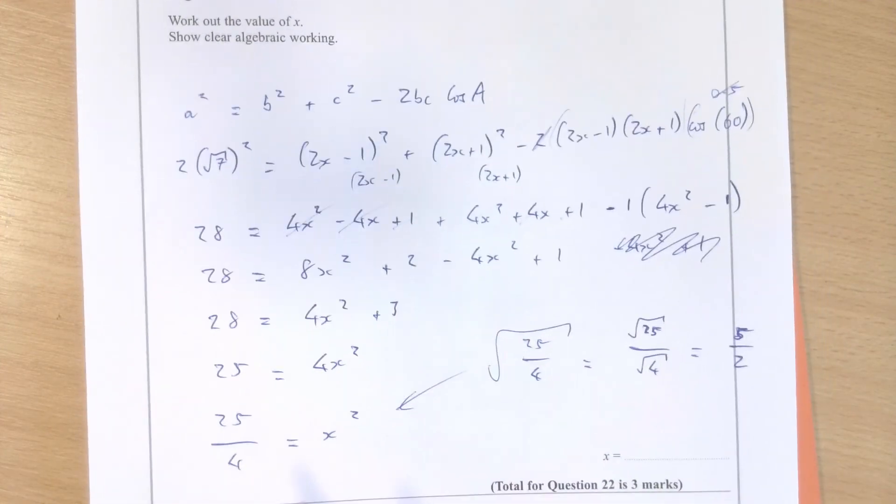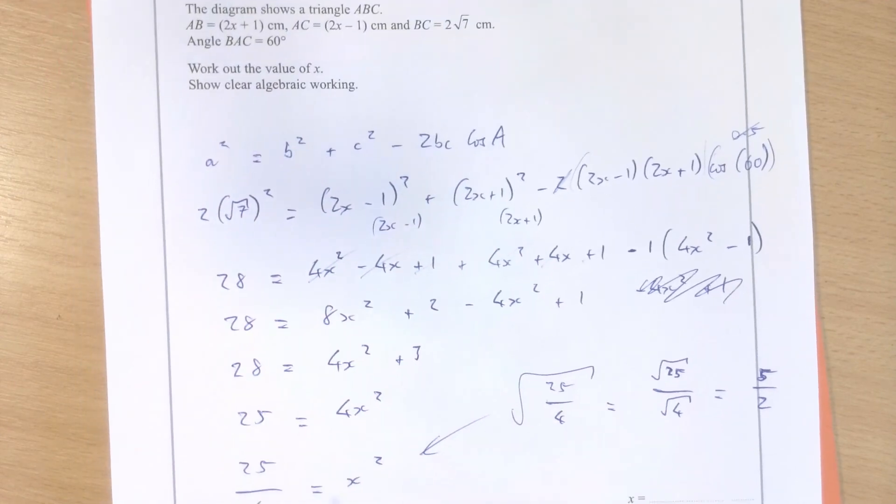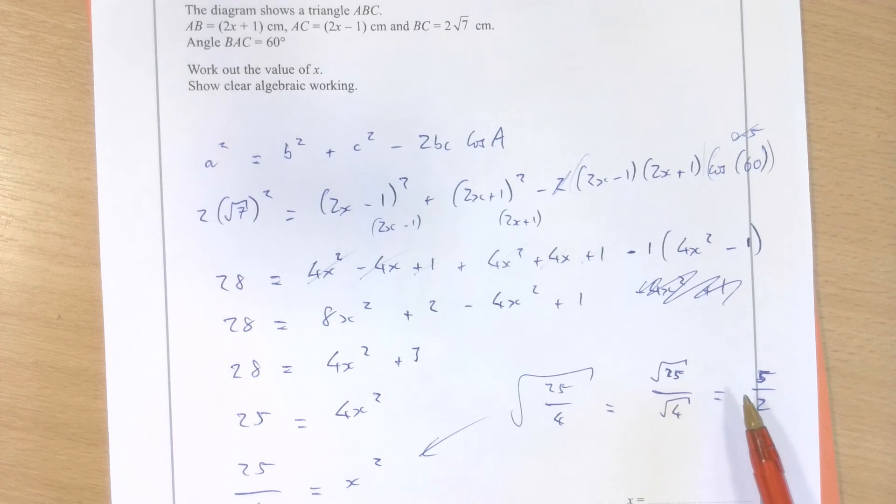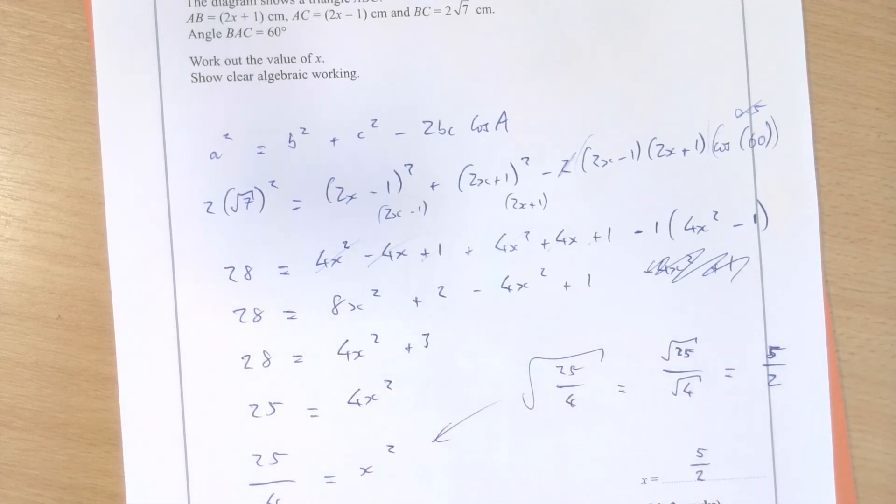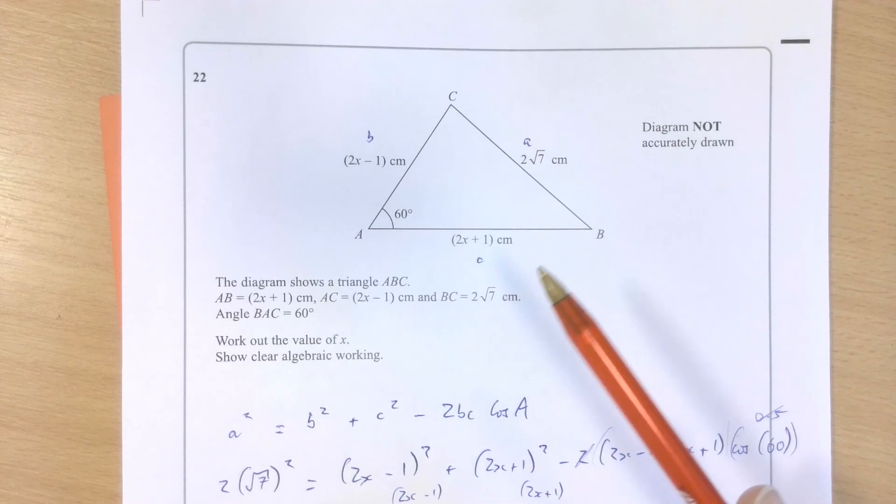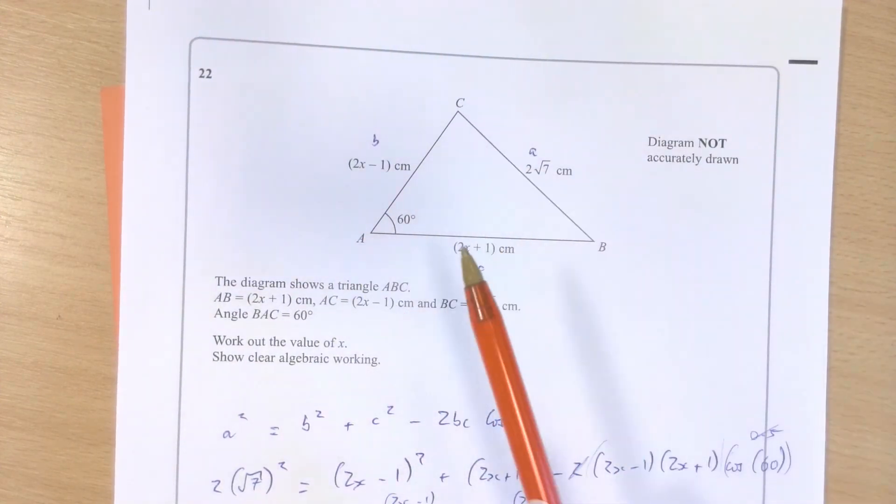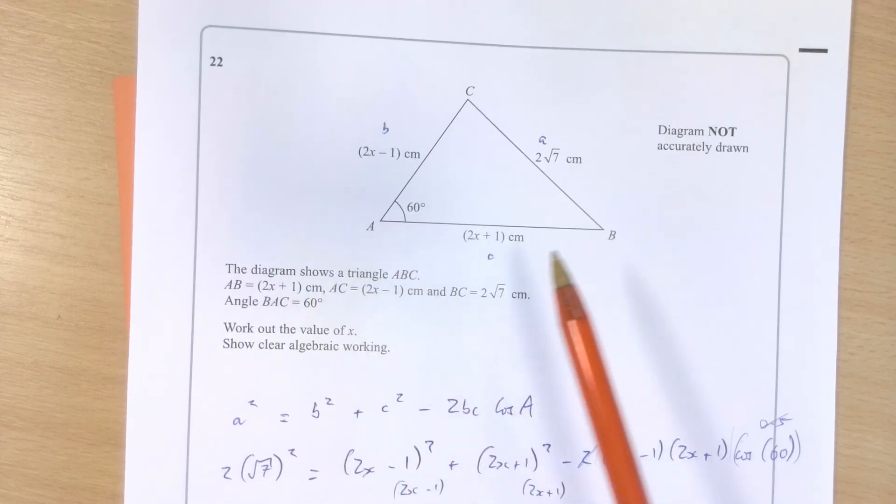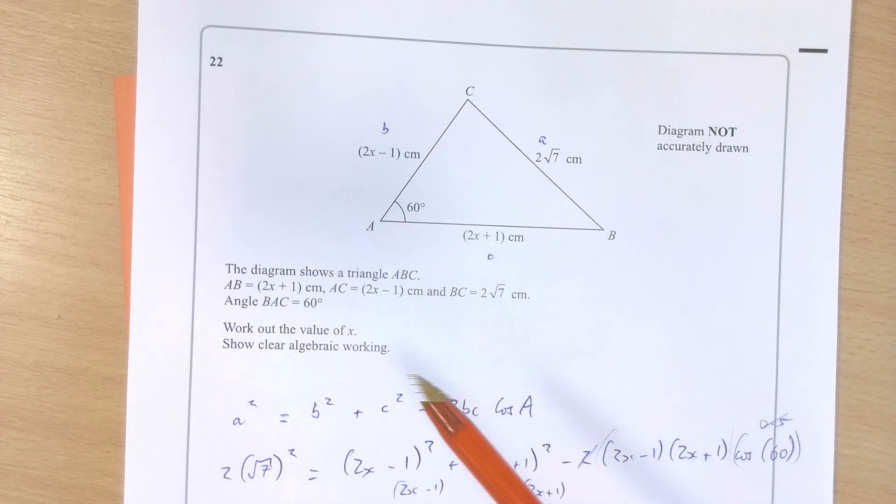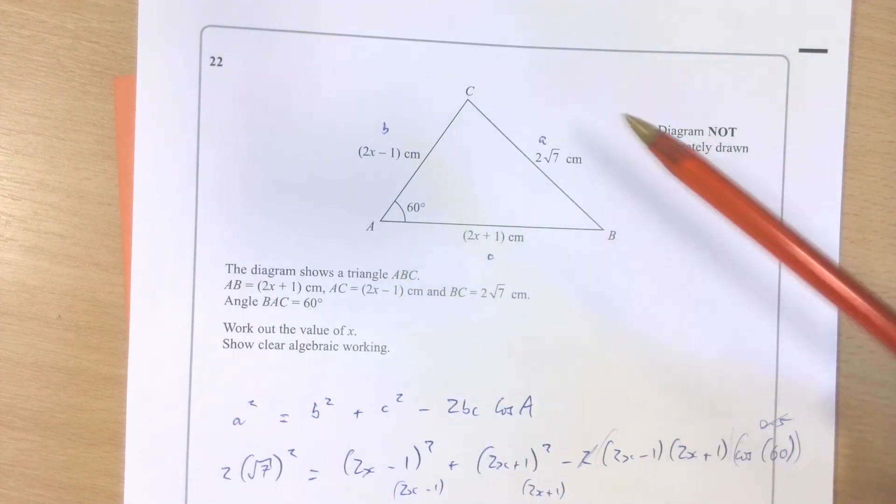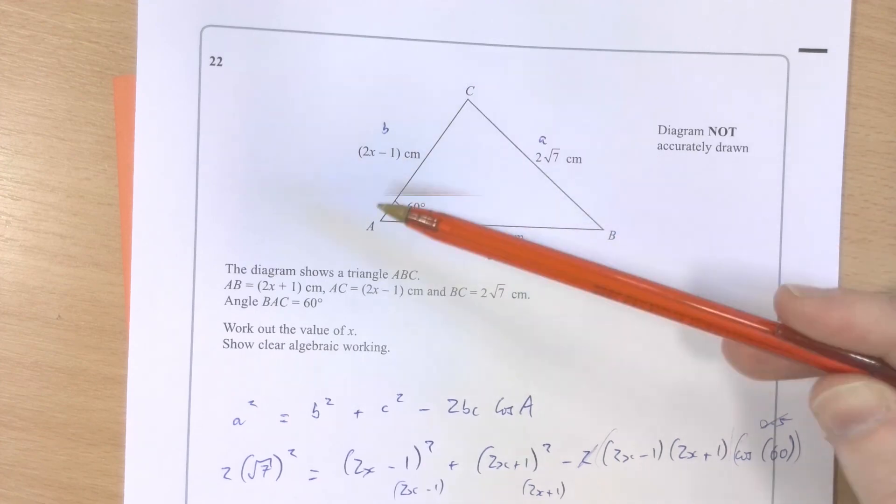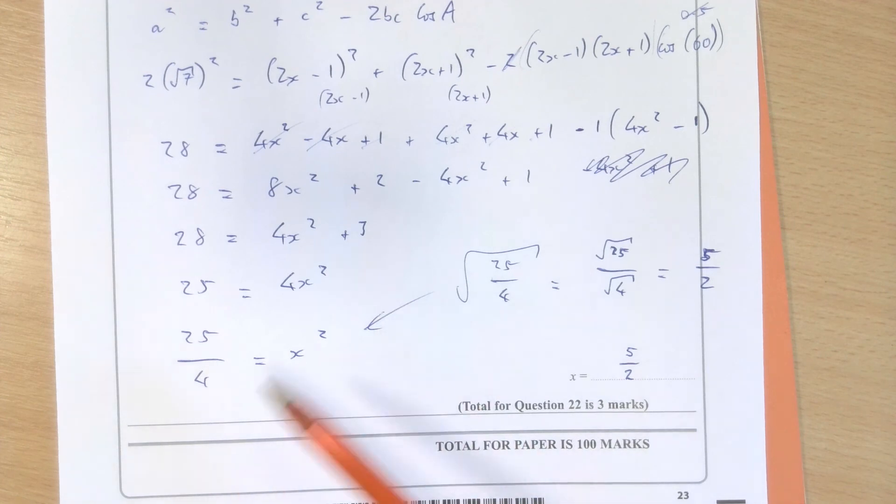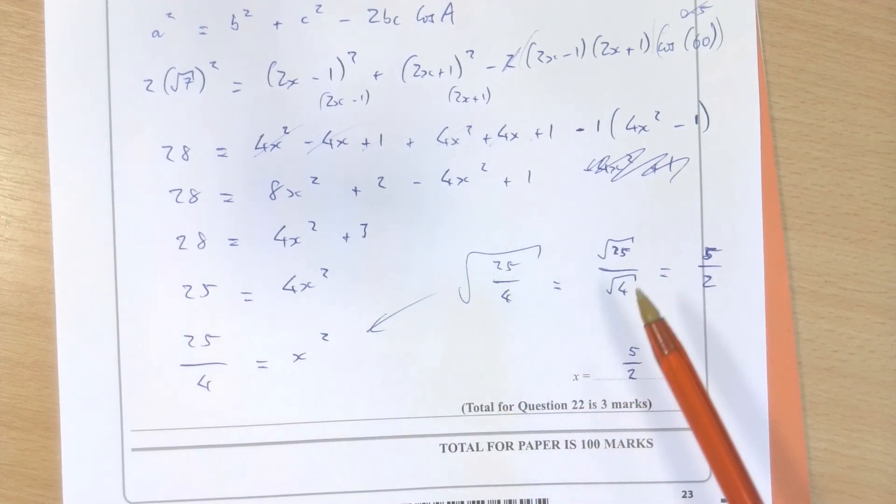And again, let's think about the single value of x that could arise from this. 5 over 2 is the single answer to this question. You can write that as 2.5 if you like. And the reason it isn't going to be negative when we square root these is because, as a reminder, I'm dealing with lengths here. Usually, when I'm dealing with lengths and unknown algebraic terms, anything that's negative could potentially make these lengths negative overall. For instance, 2x minus 1. If I substitute in minus 5 over 2 into 2x minus 1, it's going to make that length negative, which doesn't make any sense. So, for that reason, I've got to take the positive value of the square root of 25 over 4, which makes 5 over 2.